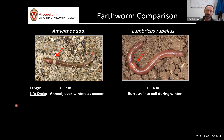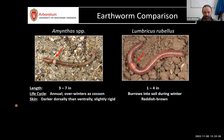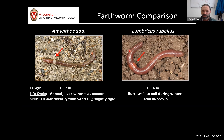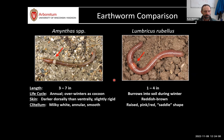Jumping worms overwinter just as cocoons — an egg within a protective leathery casing. Very important life cycle difference because it affects what you'll see in the field. Pigmentation differs too: jumping worms have a browner appearance with a dorsal-ventral difference where the back looks different from the lighter belly. Many European earthworms have a more reddish to pink hue.